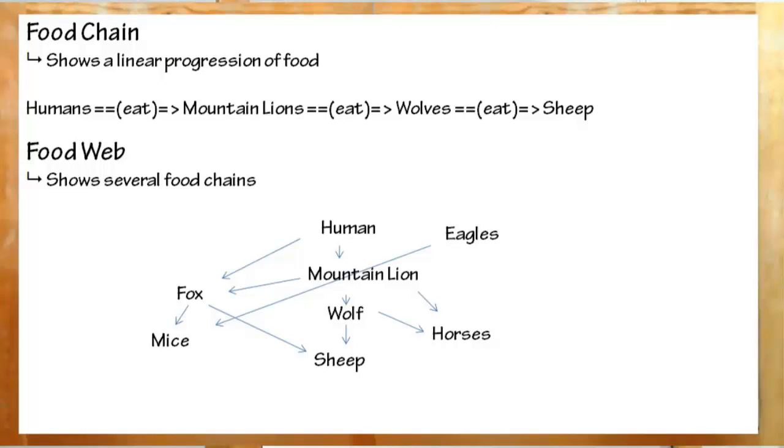You can also draw food chains, which show a very linear progression of who eats who. The other, larger diagram is the energy web, which shows a lot of things eating a lot of other things, in a more accurate, if slightly more messy, diagram.